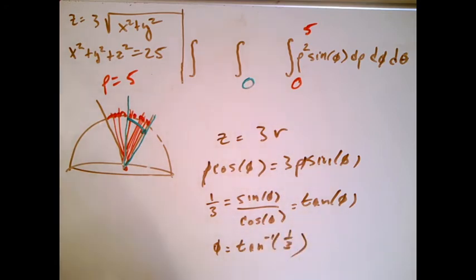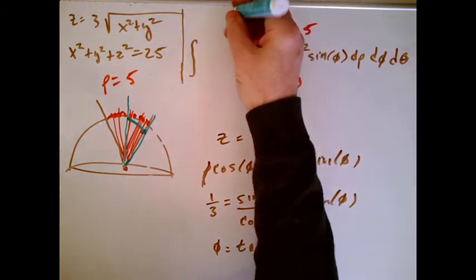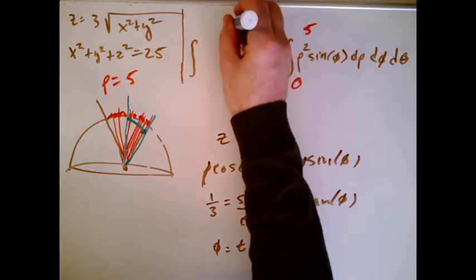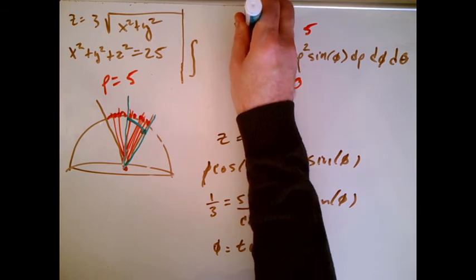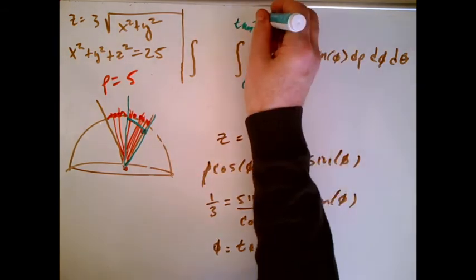And that's going to give us our biggest phi. So that's going to go way out here like this, so that's arctangent of 1/3.